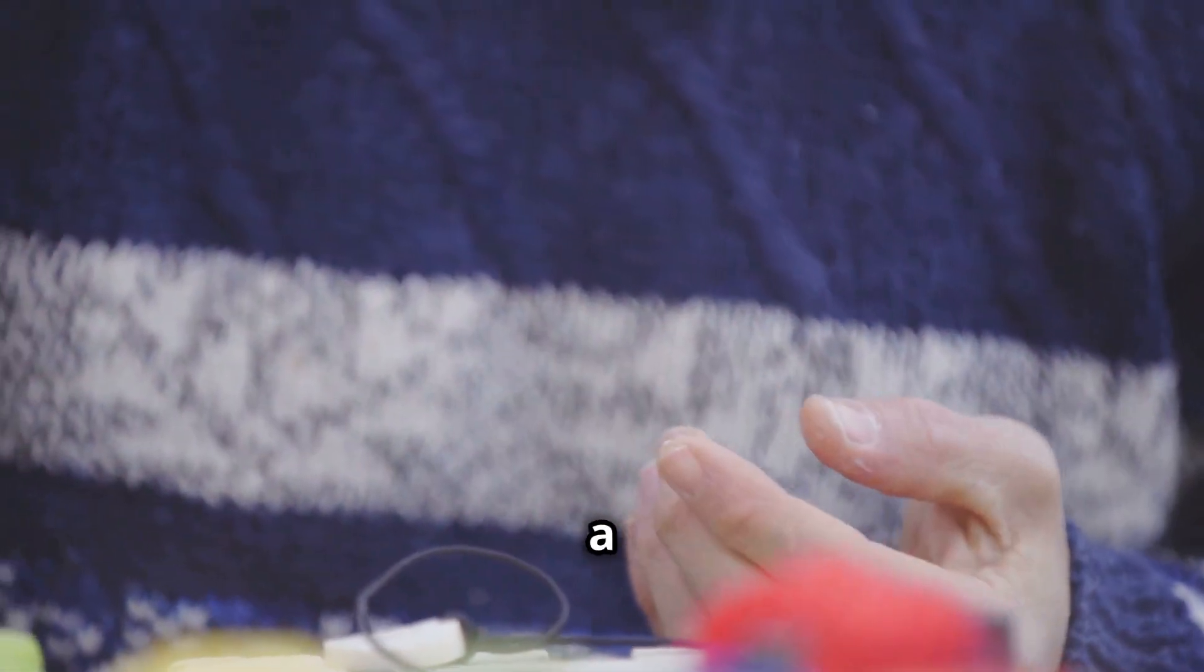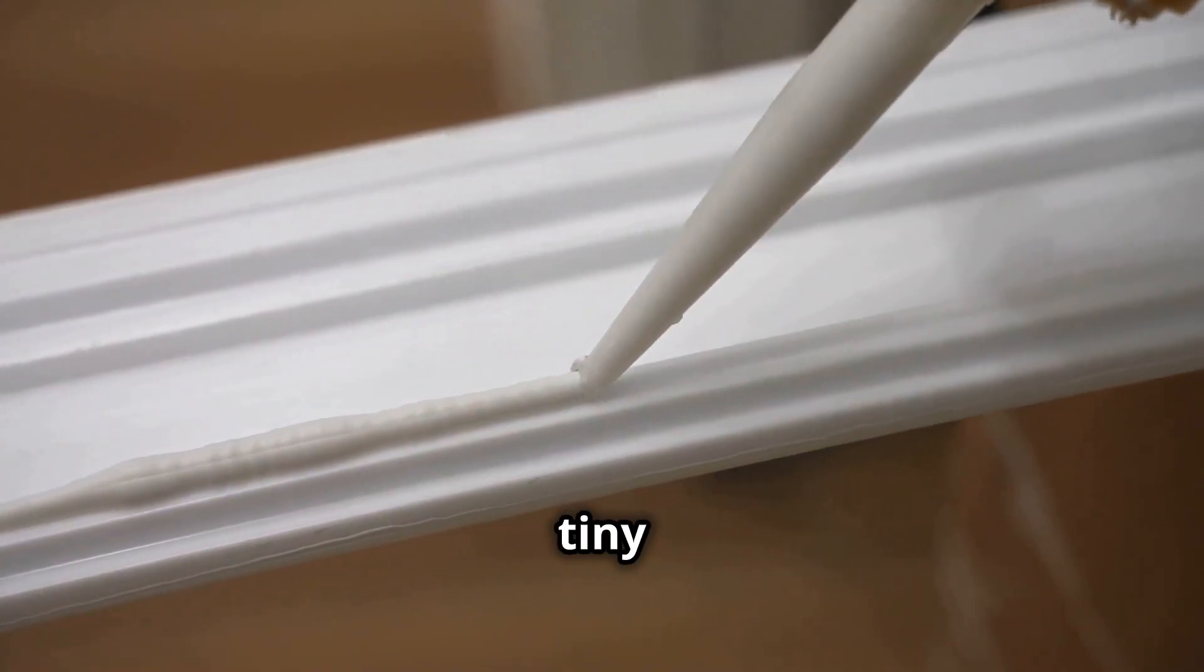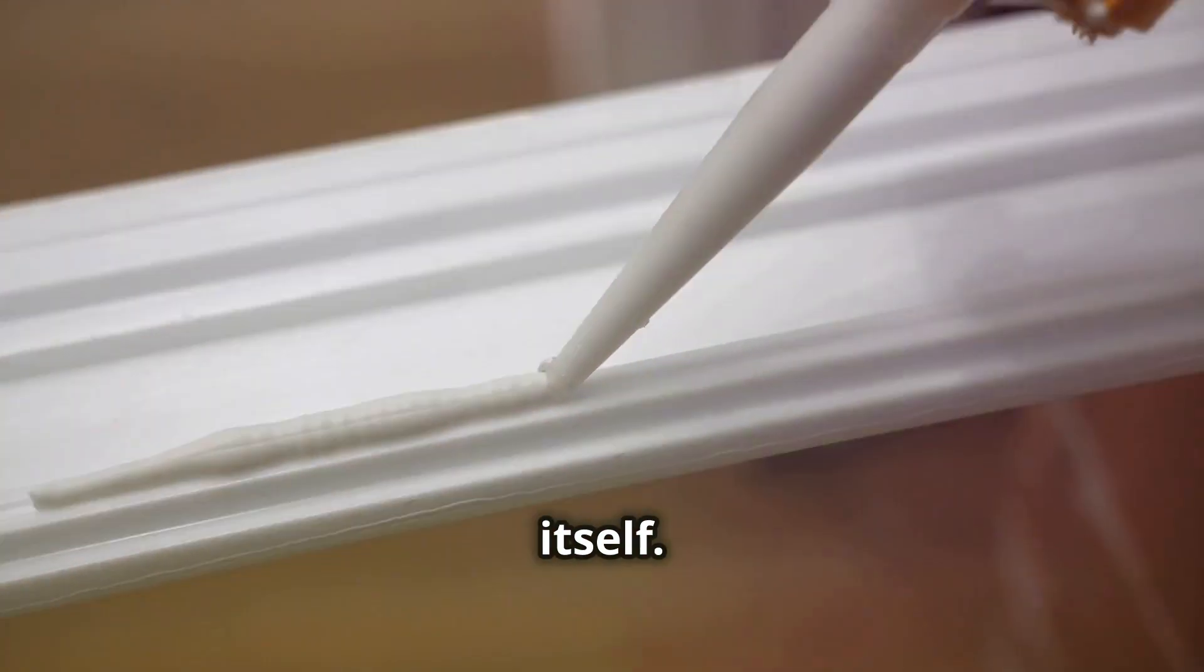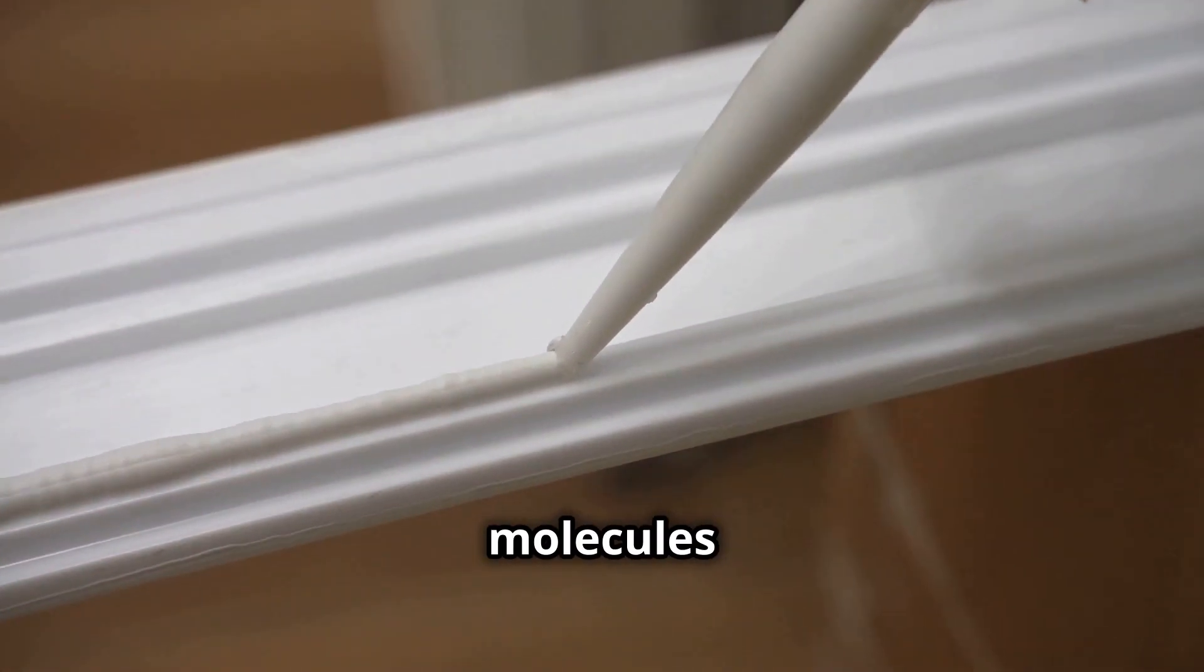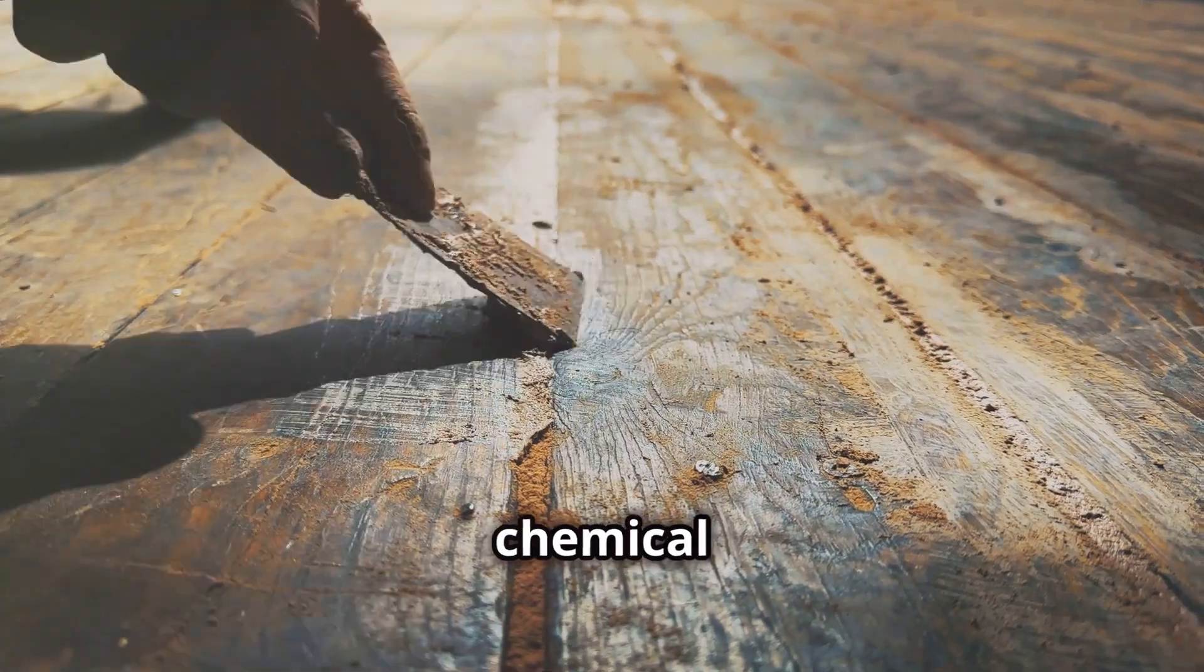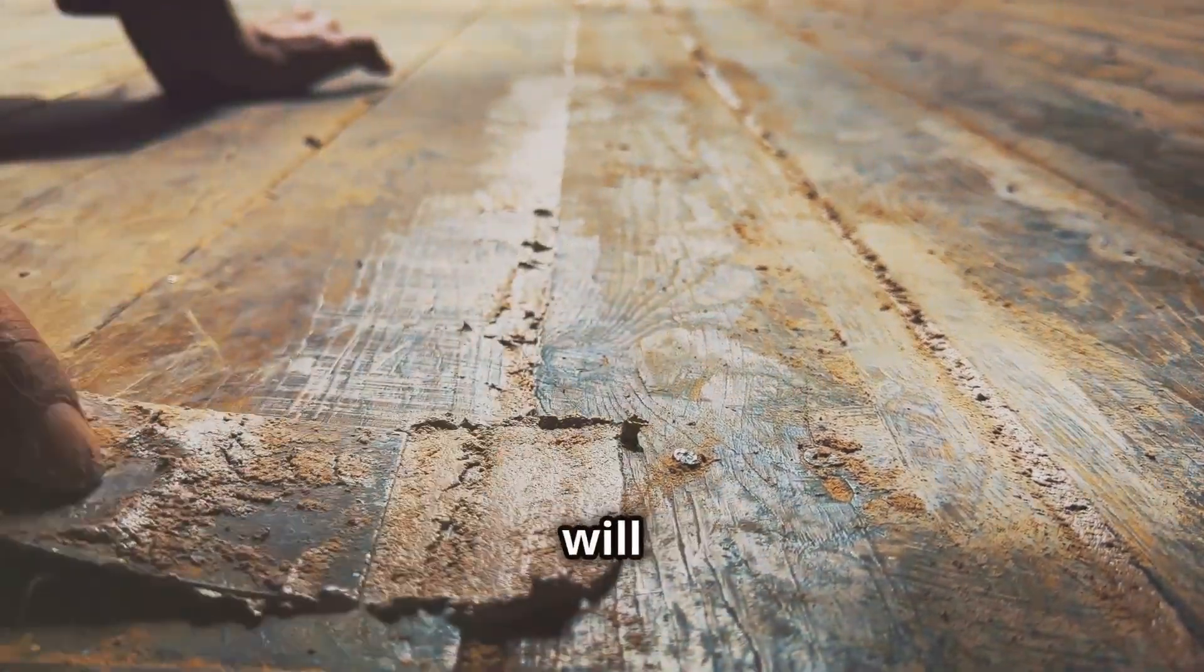When you apply glue to a surface, it spreads out and fills in tiny cracks and pores. This increases the surface area where the glue can attach itself. As the glue dries, its molecules form chemical bonds with the surface, creating a solid connection. The stronger these chemical bonds are, the stronger the adhesive will be.